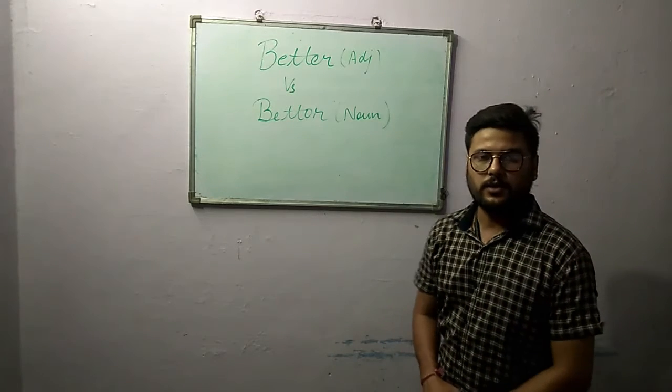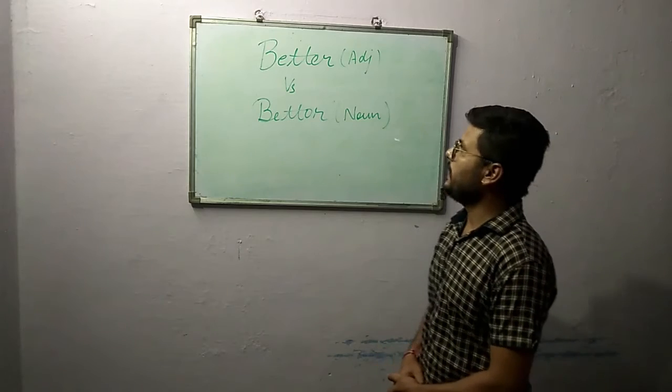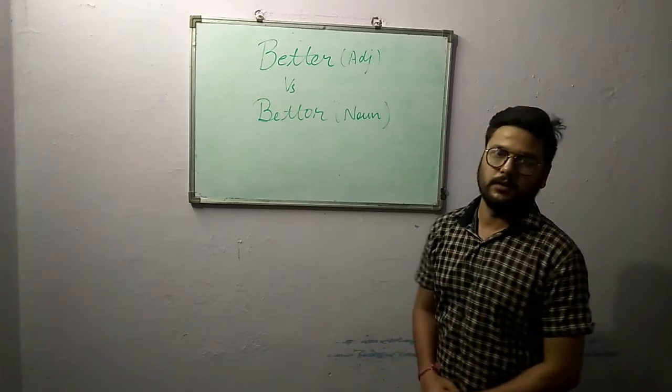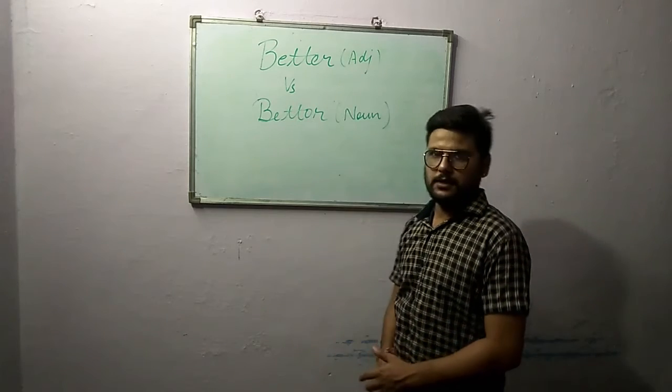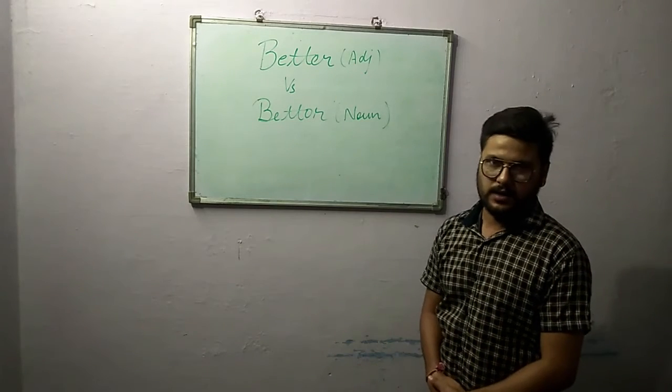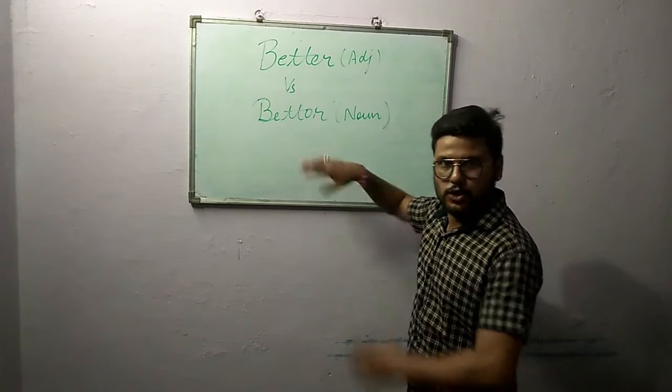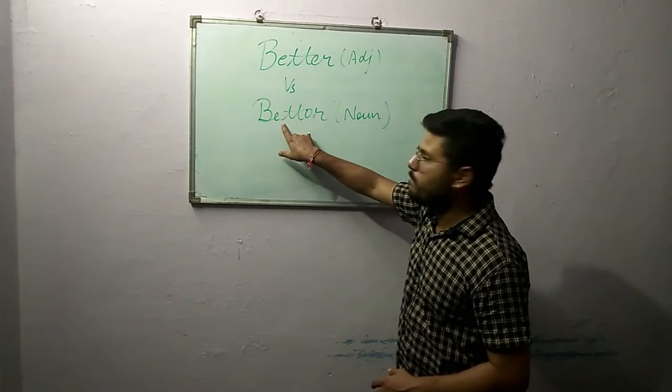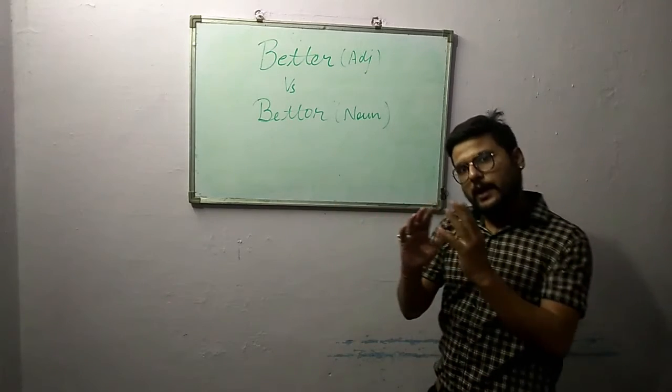Hello guys, welcome to the English Junction. Today we are talking about two look-alike words. First is B-E-T-T-E-R, which is an adjective, and the other is B-E-T-T-O-R. The one who bets is called bettor. That's why this is a noun.